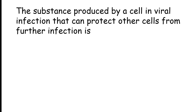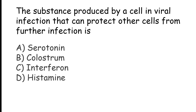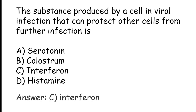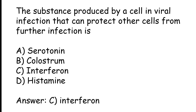The substance produced by a cell during viral infection that can protect other cells from further infection is: Serotonin, Colostrum, Interferon, or Histamine. The correct answer is Option C. That substance is Interferon.